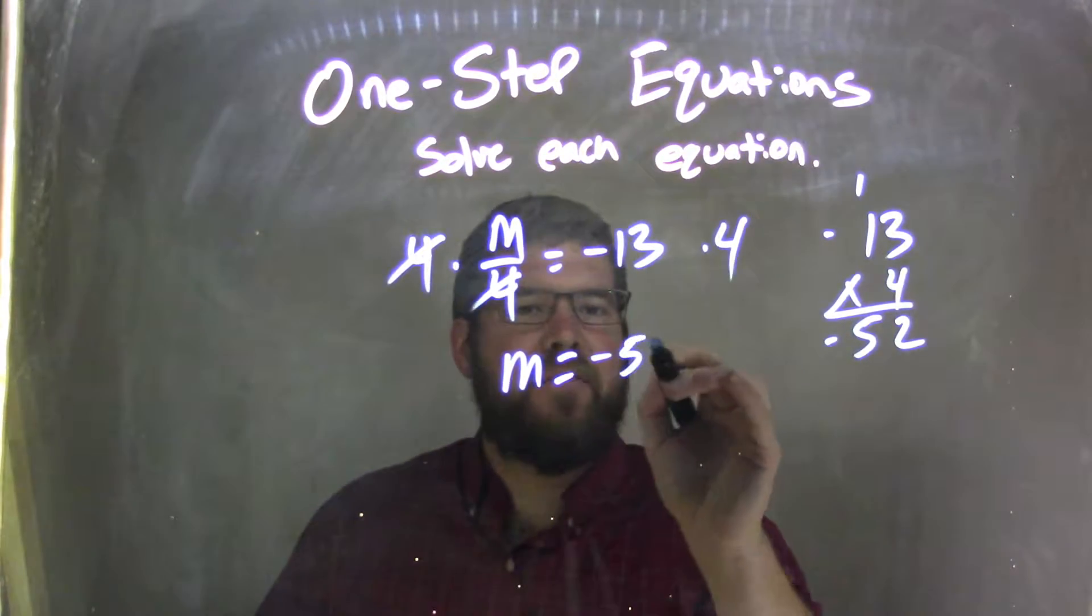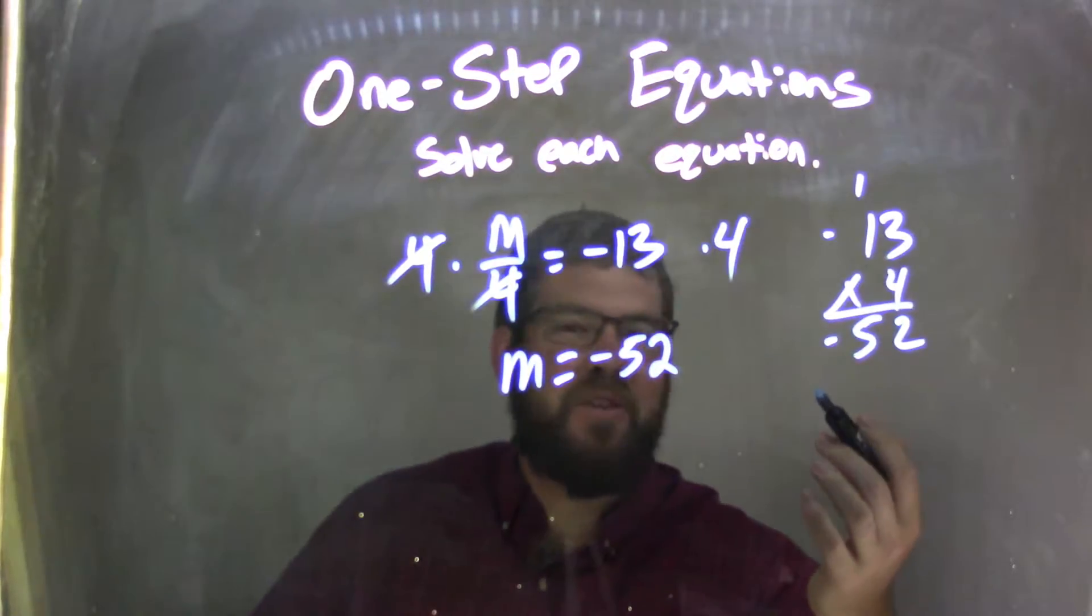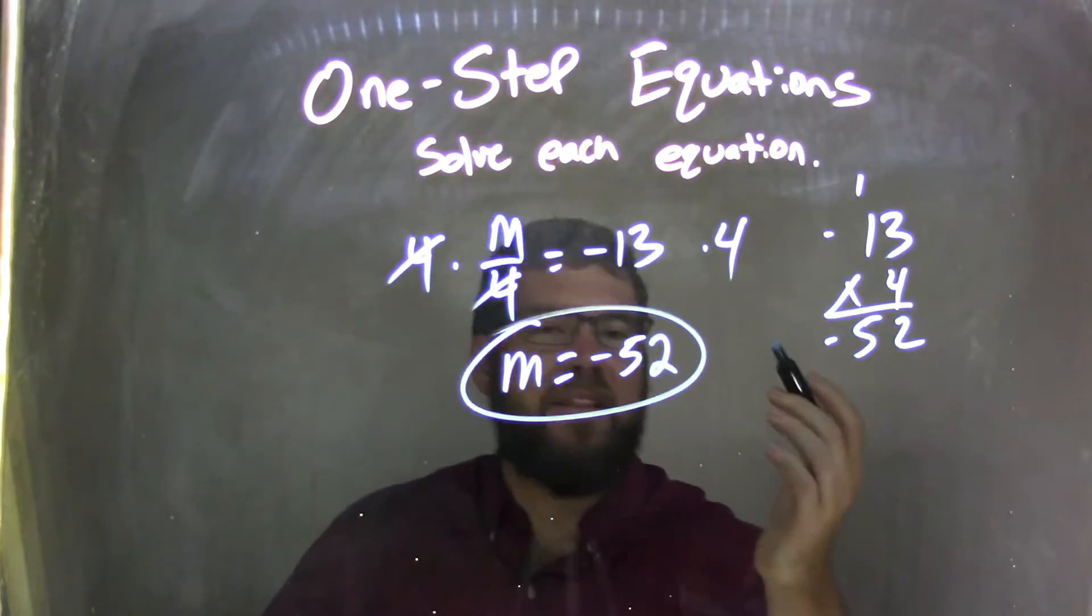So m equals negative 52 here. And that's actually our final answer. We have nothing else left to do.